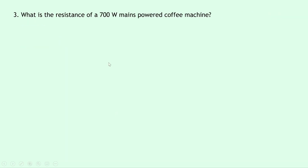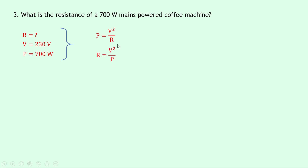Lastly, question three says: what is the resistance of a 700 watt mains-powered coffee machine? Again, the word mains tells us the voltage is 230 volts. We're trying to find resistance R, the voltage V is 230 volts, and the power is 700 watts. Our equation is P = V²/R. Rearranging for R gives R = V²/P. Substituting gives 230² over 700, which gives an answer of 76 ohms.